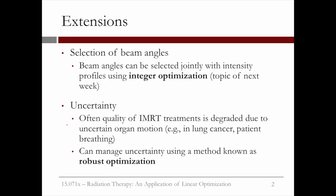There are many extensions to the optimization model we described here. One is the selection of beam angles. The beam angles can be selected jointly with the intensity profiles by using integer optimization. This allows the treatment to be further personalized to the specific tumor and person receiving the radiation. Integer optimization is another type of optimization model and will be the topic of next week.